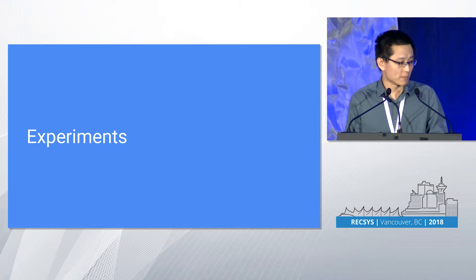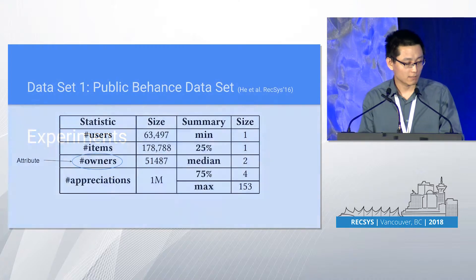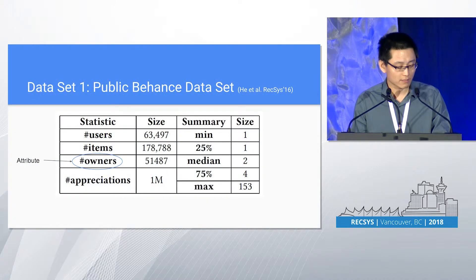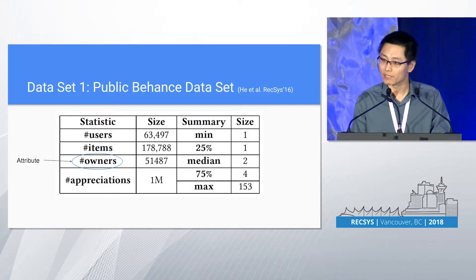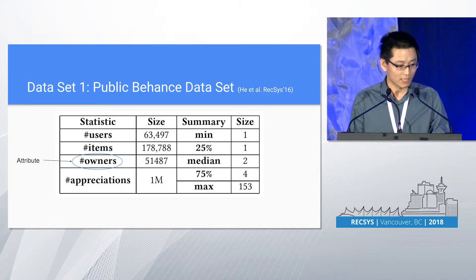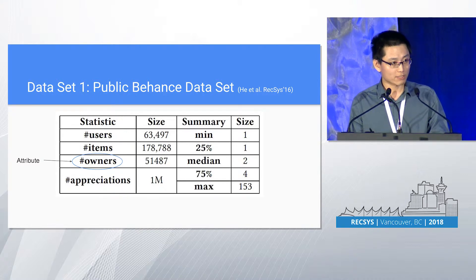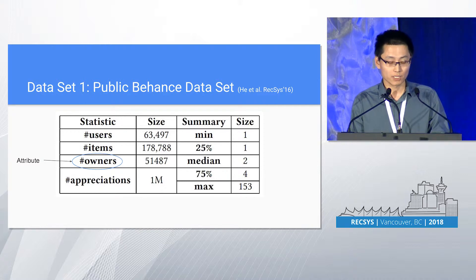We conducted a few experiments. First, on the public Behance dataset — these are the statistics of the dataset. The attribute here is the owner: each item is associated with one owner. The right part shows the distribution of group size — how many items does each owner own? It's highly skewed, an unbalanced grouping structure.